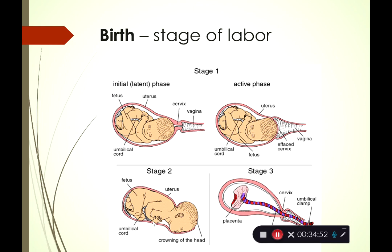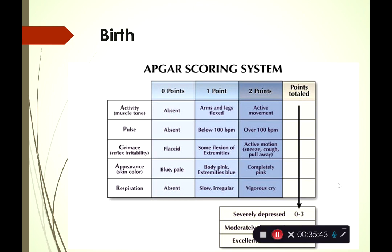Our last topic is birth. When you go into labor between 38 and 42 weeks, there are three stages: the initial stage with signs and active labor with contractions and cervix expanding; stage two is the actual birth of the child; and stage three is delivering the placenta. Once that baby is born, they will be assessed using the APGAR scoring system — which you are responsible for knowing. APGAR is an acronym: A is activity, P is pulse, G is grimace, A is appearance, and R is respiration. Each of the five categories is scored zero, one, or two; the highest score is 10.